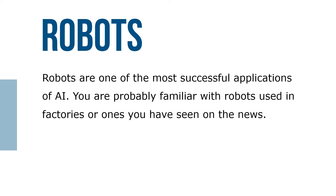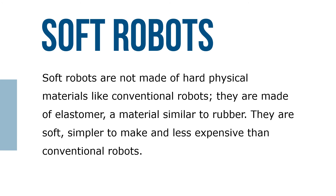Robots are one of the most successful applications of AI. You're probably familiar with robots used in factories or ones you've seen in the news. Soft robots are not made of hard physical materials like conventional robots — they're made of materials similar to rubber. They're soft, simpler to make, and less expensive than conventional robots.